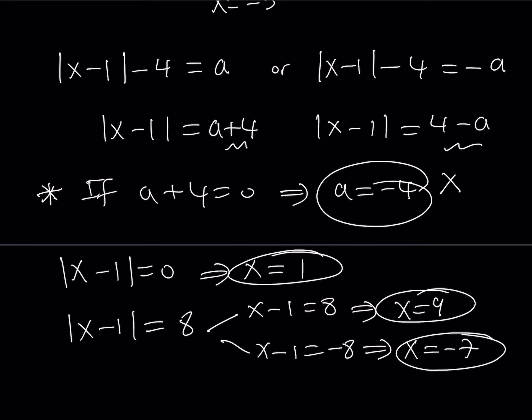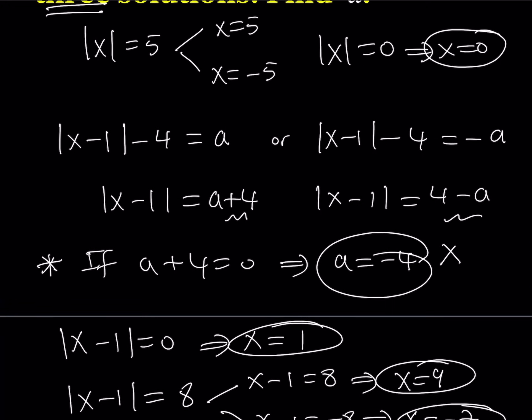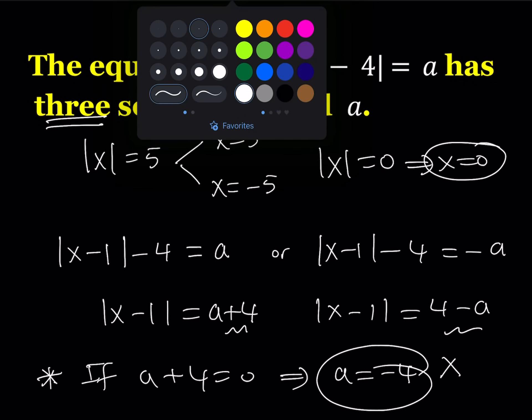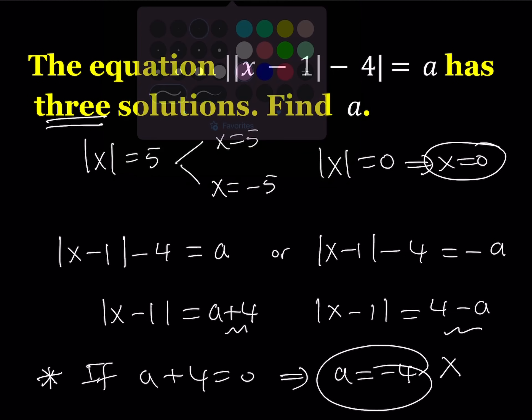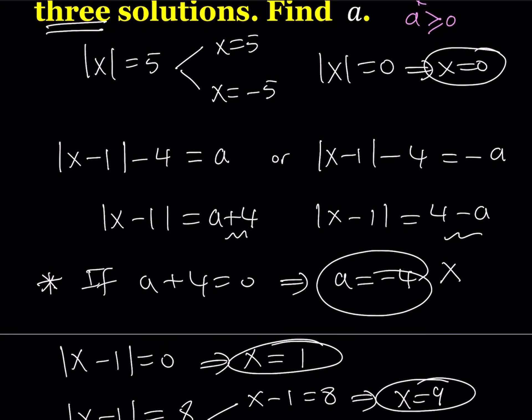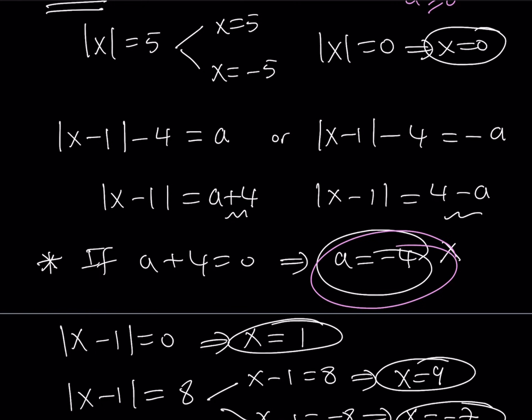So can we safely say that a equals negative 4? No, you can't. Why can't we say that? Because if you go back, you'll notice that the absolute value of something equals a. So we have this requirement. a needs to be non-negative, which means a is greater than or equal to 0. What happens in that case? Well, a equals negative 4 is not acceptable. I can't take this value. Therefore, that's not the solution.